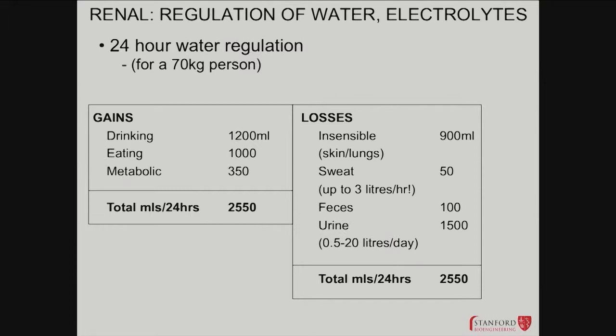Urine is the main dial that the body has to control balance. Everything else is a response to environmental and metabolic conditions. Your body adjusts on the output end — and of course it can control how much you drink on the input end. Those are the two things the brain and the kidney can work together most flexibly to control.